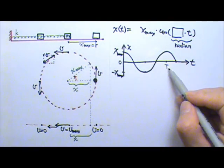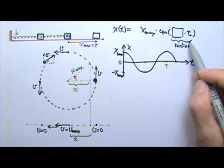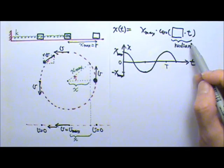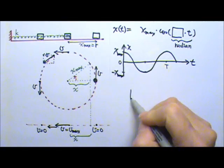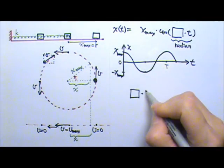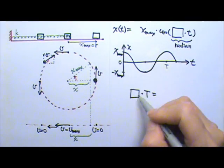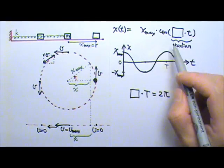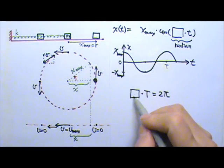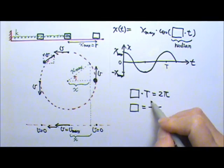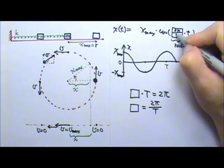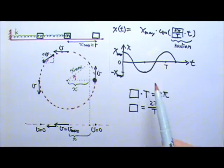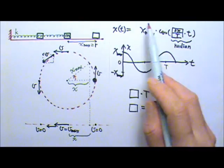Which means if I plug in t equals one period, I'm going to get this whole cycle, and the cosine repeats itself every two pi radians. Which means if I plug in t as the period, the angle in here should equal two pi so the cosine would repeat itself. That means what goes in the box must be two pi divided by the period. So the equation for position as a function of time uses amplitude times cosine of (2π/T) times t.